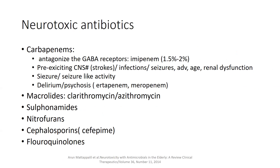Neurotoxicity from antibiotics is rare but often unpredictable and potentially dangerous in the elderly. Among the higher-risk antibiotic classes, imipenem is the most commonly implicated, with a prevalence of seizures of 1.5 to 2%, as imipenem can antagonize GABA receptors. Those at highest risk include patients with pre-existing CNS disease such as strokes, infections, and prior seizures, as well as those with advanced age and renal dysfunction. Neurotoxic symptoms are often seizures or seizure-like activity, though delirium and psychosis can also be seen with ertapenem and meropenem.